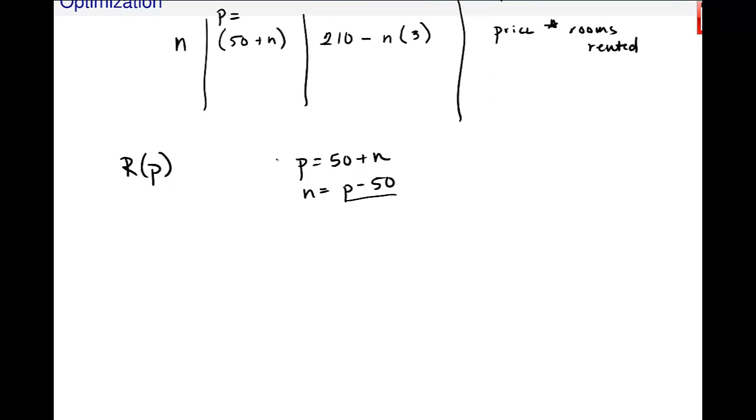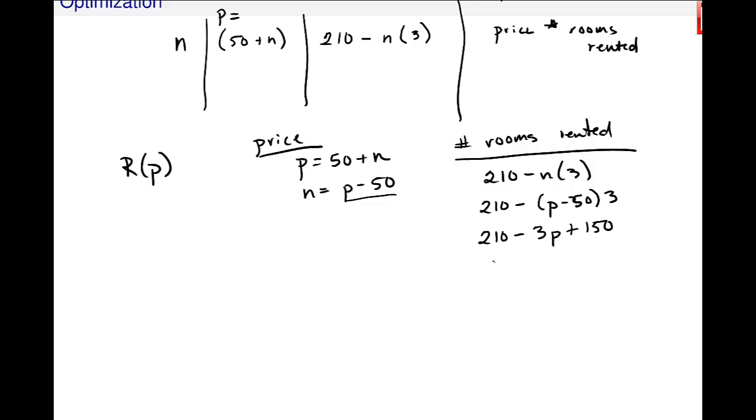And then the number of rooms rented, so this is my price. Number of rooms rented in terms of price is this 210 minus n times 3. But I can put in this p minus 50 for n, times 3. And so I'll go ahead and do that. 3p and this is plus 150. Is that what you guys get? So I think I'm getting here 360 minus 3p for the number of rooms rented.